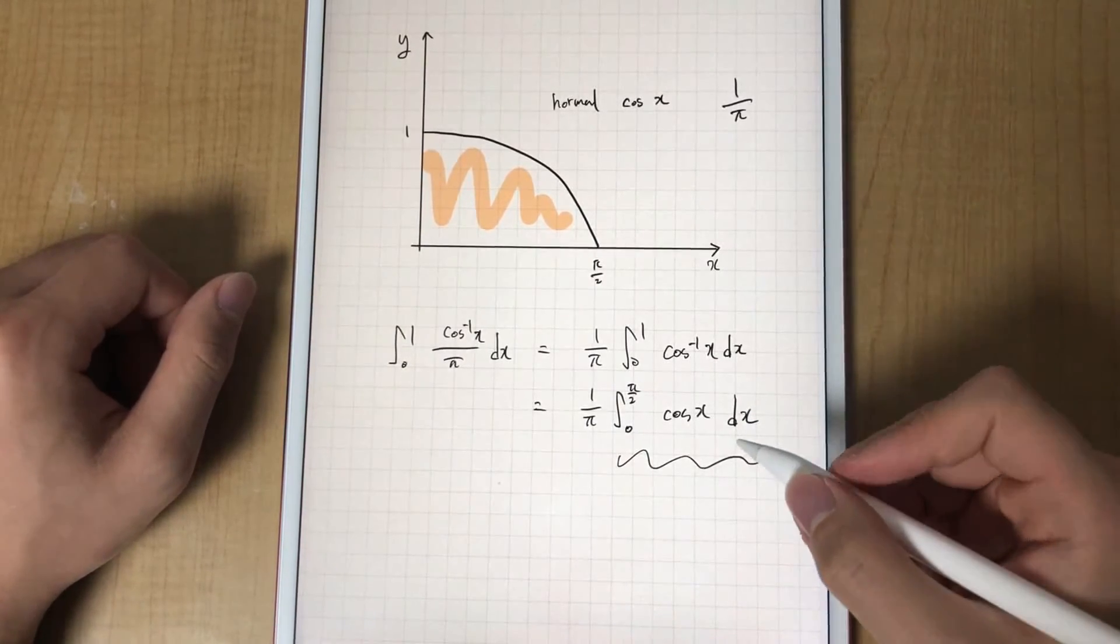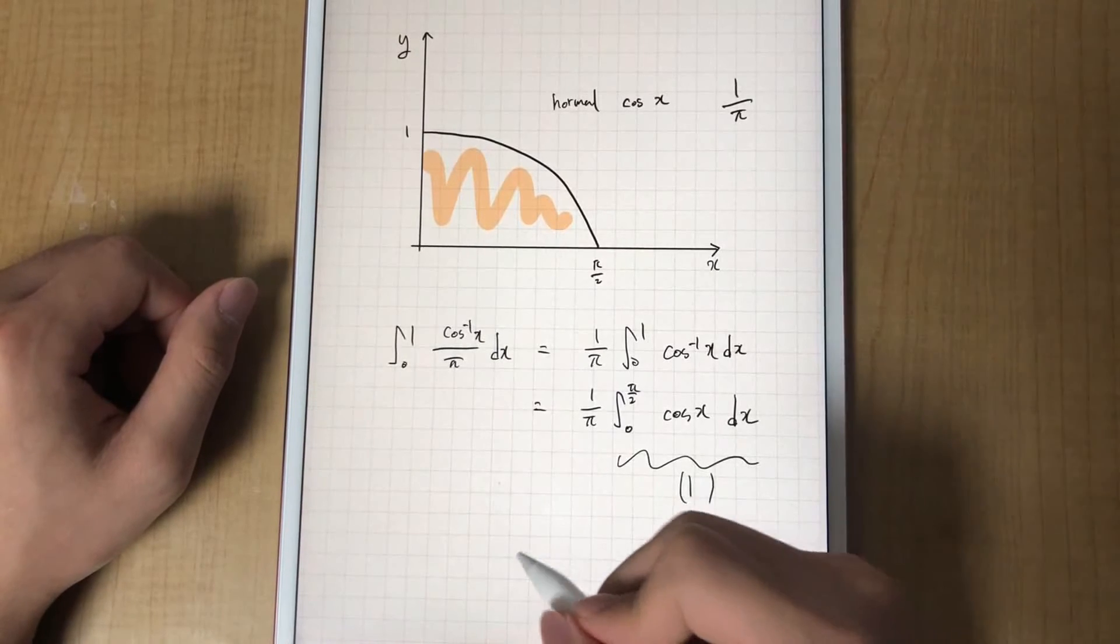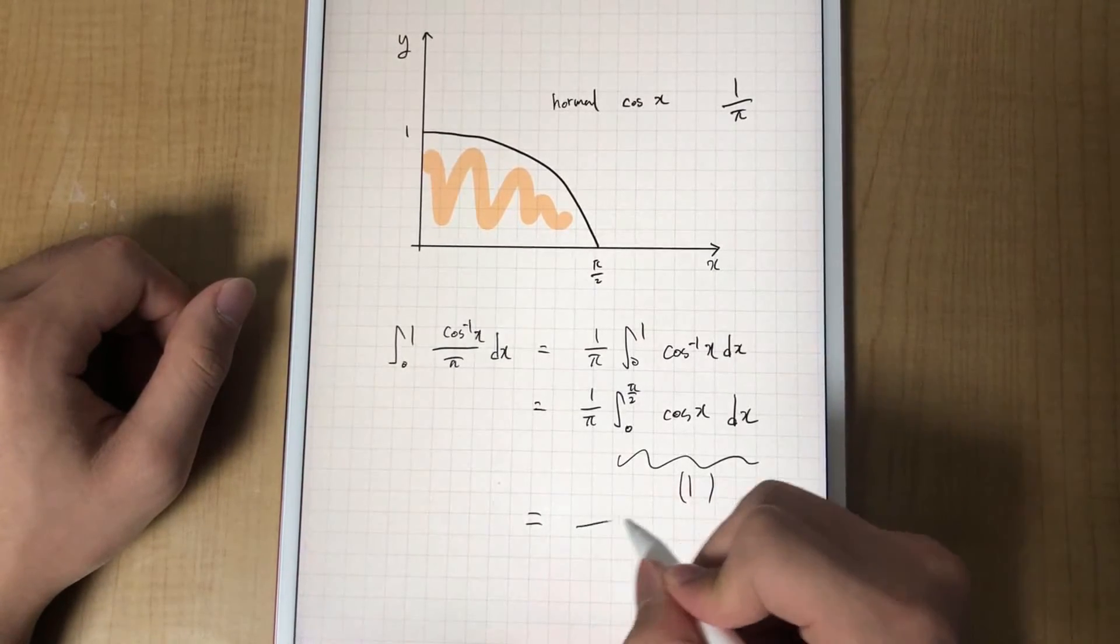We can calculate easily, which is 1. Thus the final answer is 1 over pi.